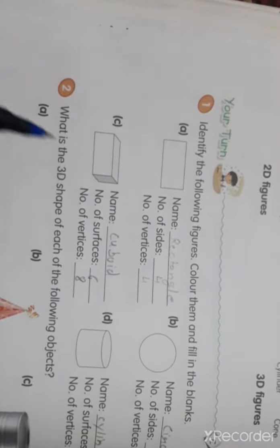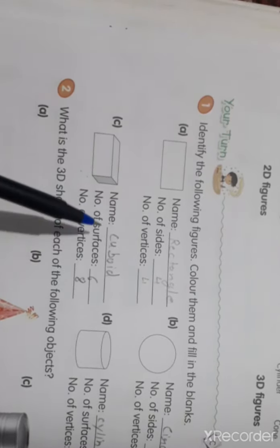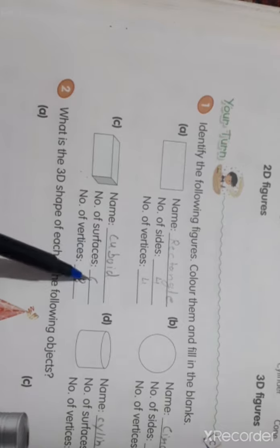Third one, C, tell me, what is this? Cuboid. It is the cuboid, why? Because in cuboid we have the length, breadth and thickness also, height also. So now, it is called the cuboid. So name cuboid, number of surface 6: 1, 2, 3, 4, 5, 6.